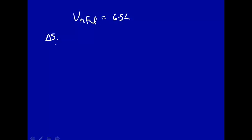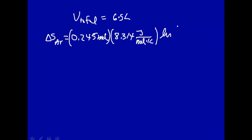So delta S for argon is 0.245 moles times R, 8.314 joule per mole kelvin, times the natural log of 6.5 liters over the initial volume of 4.0 liters. This comes out to 0.989 joules per kelvin.